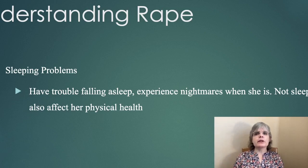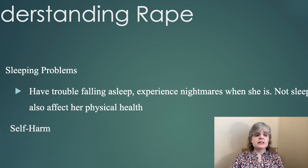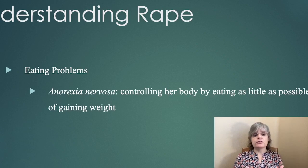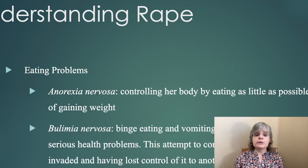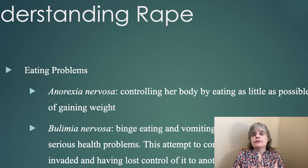She will need a lot of help with what she fills her mind with before going to bed. With all the emotion involved, people need to do something with their emotions when they go through deep hurt or trauma. Many engage in self-harm, seeking ways to be relieved of painful emotions by injuring themselves and thereby releasing endorphins to feel better. They could also have eating problems such as anorexia nervosa — controlling the body by eating as little as possible — or bulimia, binge eating and vomiting. Both are forms of self-harm that cause serious health problems and reflect a reaction to having lost control of the body to someone else.